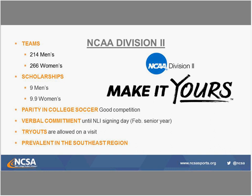You still make a verbal commitment and sign a National Letter of Intent in early February of senior year at Division II — the process is the same as Division I. The timeline is a little more delayed. On the men's side, you'll probably make a verbal commitment to a Division II program sometime in the summer going into senior year, with those programs finishing recruiting by early to mid-winter of senior year. The women's side has accelerated a little, but given the new NCAA rules and regulations, we're still unclear on how that will affect the timeline.